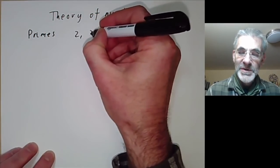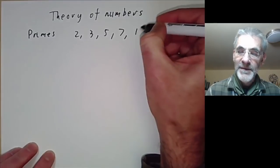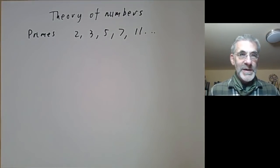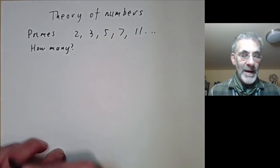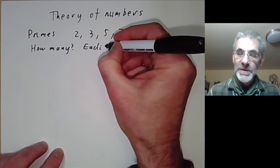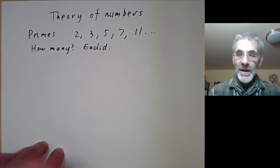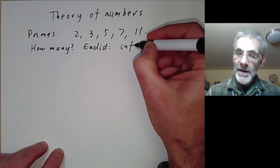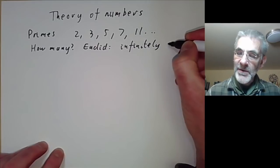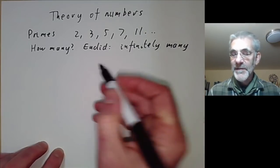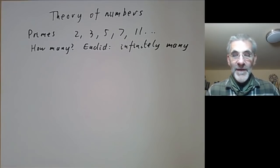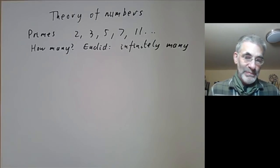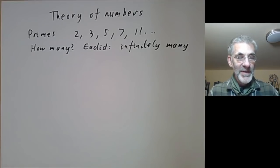You all know the primes: 2, 3, 5, 7, 11 and so on. We can ask some basic questions about primes. For instance, how many are there? The answer was given by Euclid more than 2,000 years ago — there are infinitely many. Actually, Euclid didn't quite say that, since he didn't approve of the concept of infinity. What he said was that for any finite number of primes you can find another one, but that's really the same thing.